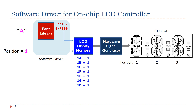Let's focus on how to write software to drive the on-chip LCD controller on STM32L4 microprocessors. The software driver takes two inputs: first, an alphanumeric character, and second, the target display position. For example, we want to display the letter A at the first position on the LCD. On computers, the letter A is represented by its ASCII value. Software looks up the font library based on the ASCII value and finds the font of the letter A. Then software modifies the LCD display memory based on the font and the display position.